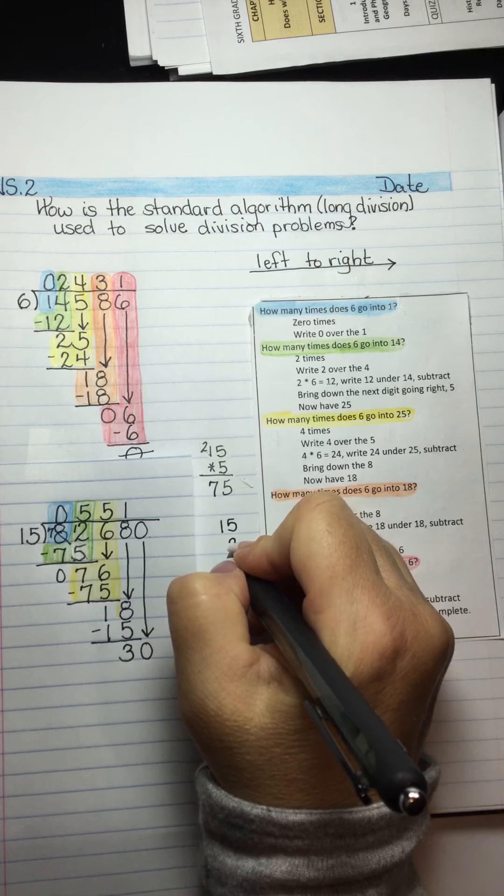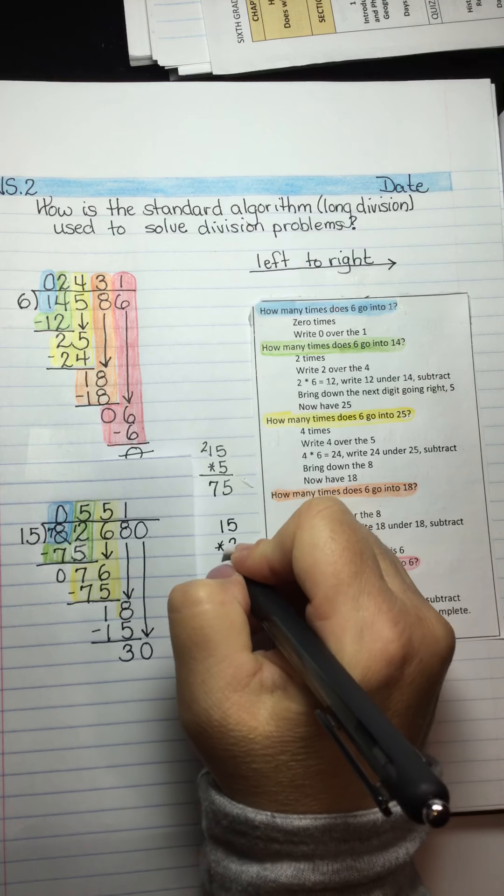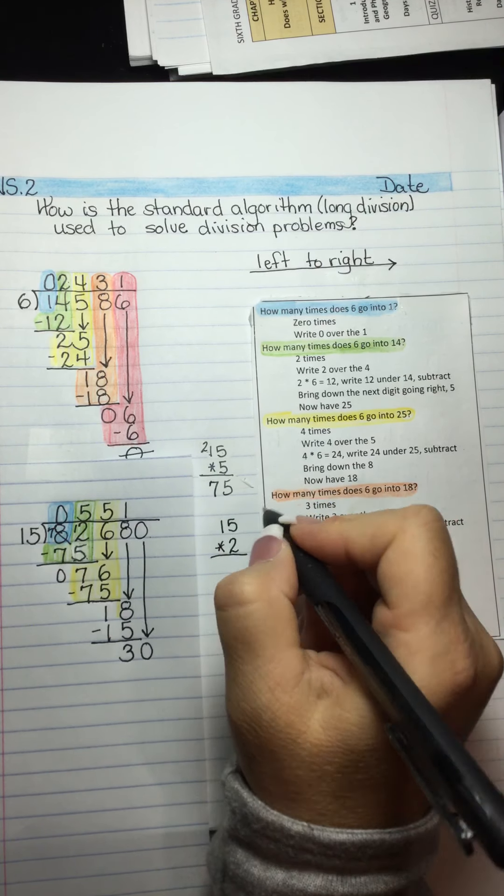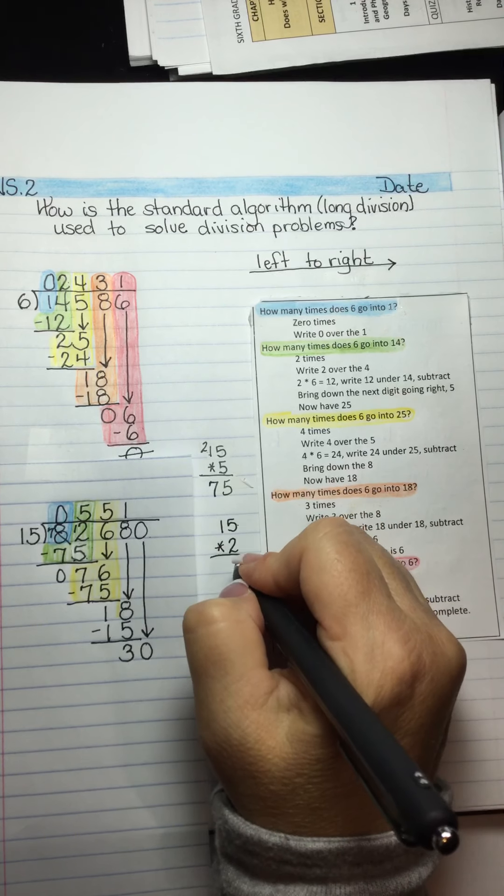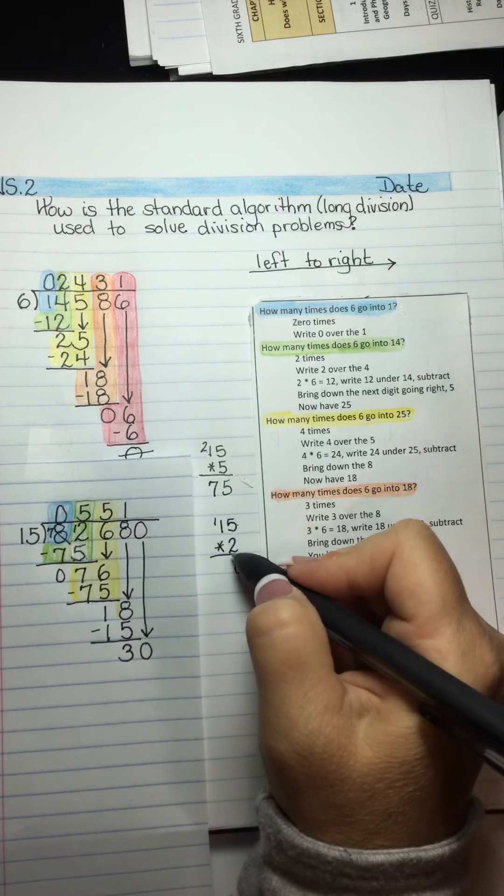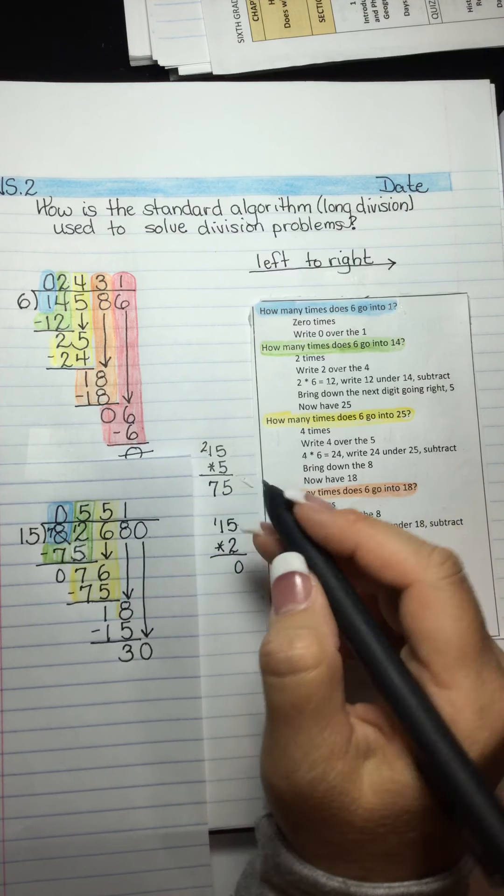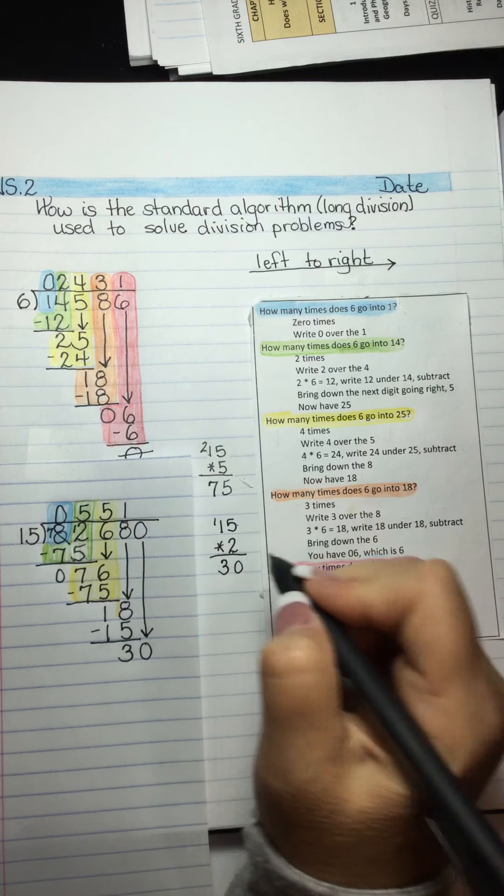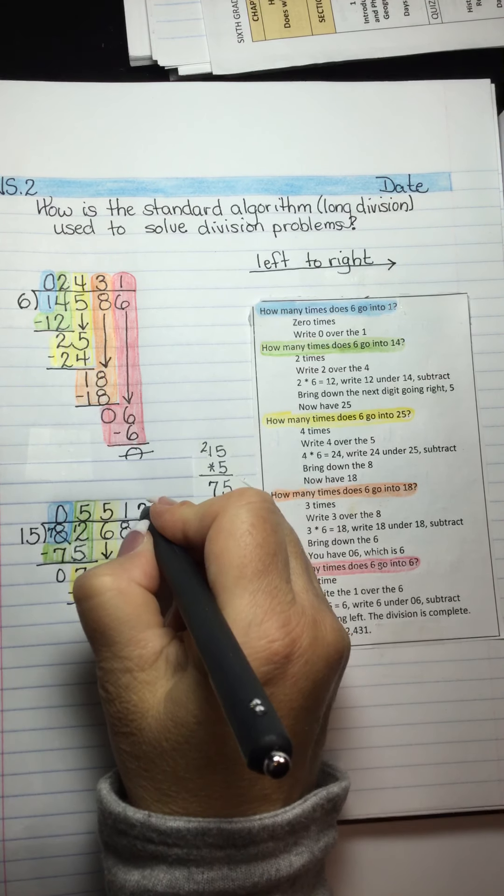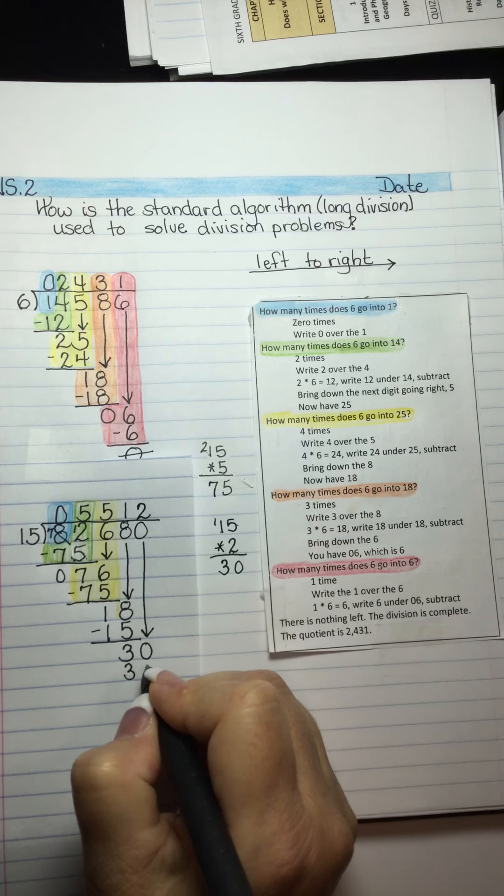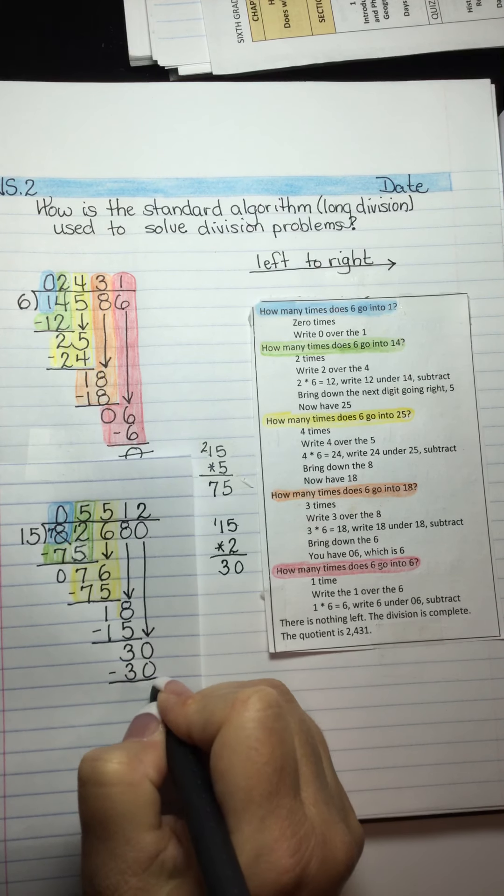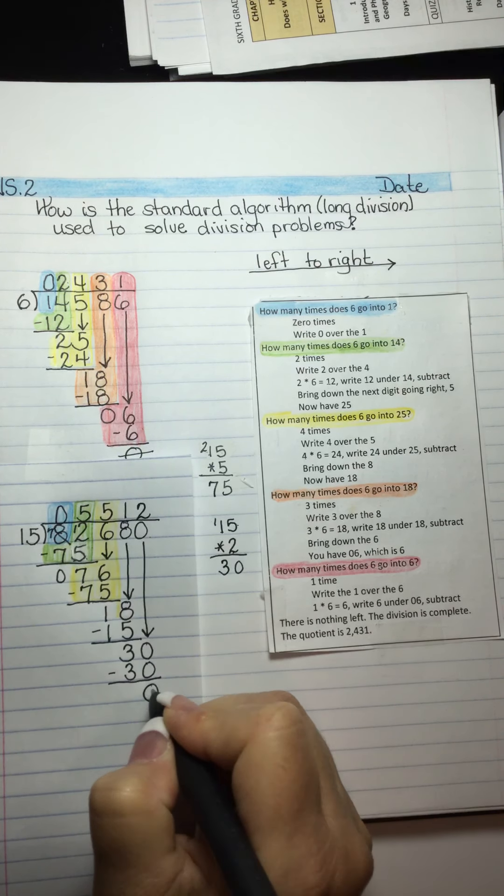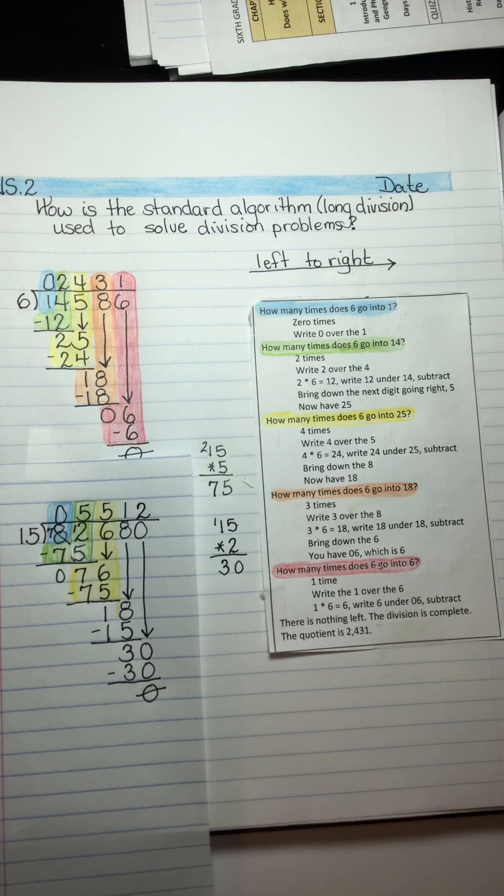And if you don't know your 15s, 30 is pretty close to 15. So I'm going to try 2. 5 times 2 is 10, carry the 1. 2 times 1 is 2, plus 1 is 3. So 15 times 2 is 30. And so there we have 30 minus 30.